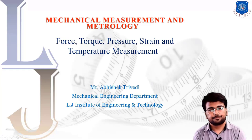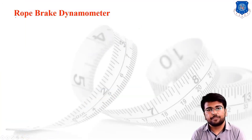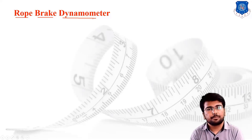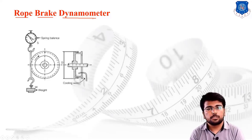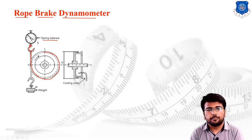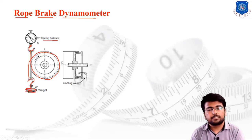Let us start with the concept of the rope brake dynamometer. As the name suggests, we are using some sort of rope — the rope applies the brake and the instrument is known as a dynamometer. The figure shows the rope brake dynamometer. We have a spring balance or spring scale, with a hook attached to it. The rope is attached and it directly covers the wheel, crosses over, and attaches with the hook.